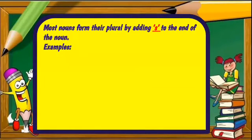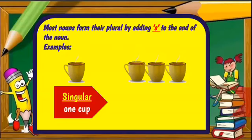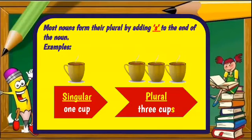Most nouns form their plural by adding s to the end of the noun. Examples: We have singular, one cup. Plural, three cups. Just adding the s at the end of cup to make the plural cups.